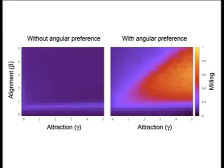We can also see that with the angular preference the schooling behavior has a dependence on the traction parameter, due to the fact that the system now exhibits a milling behavior, which was not found without the angular preference.